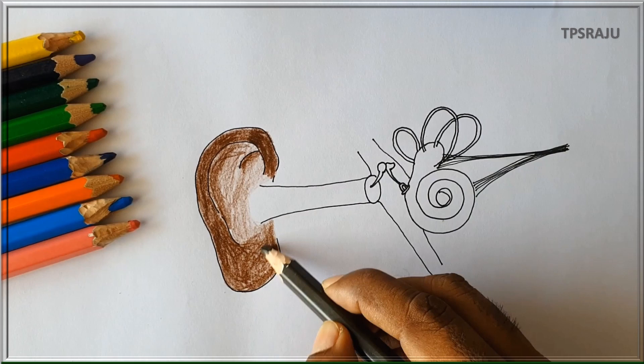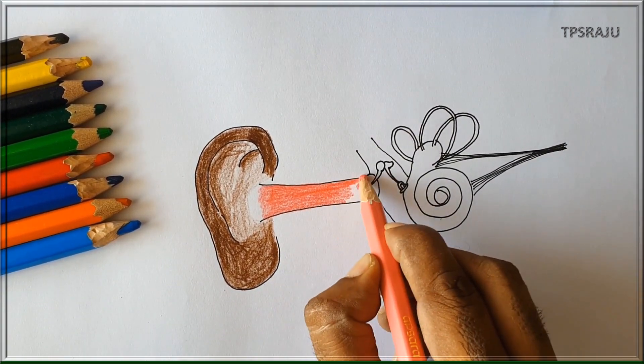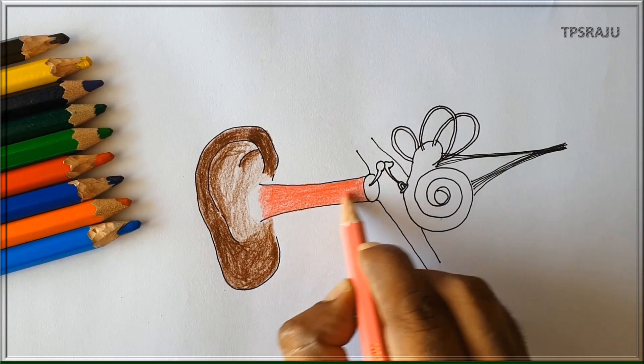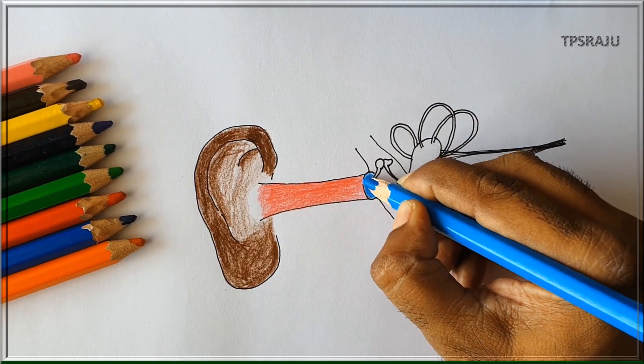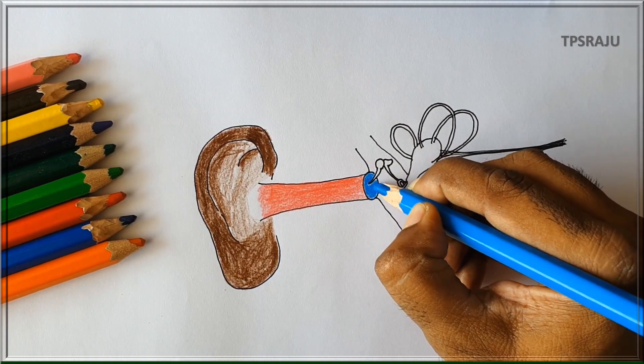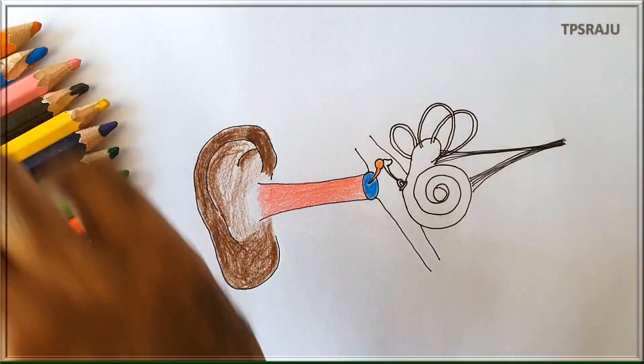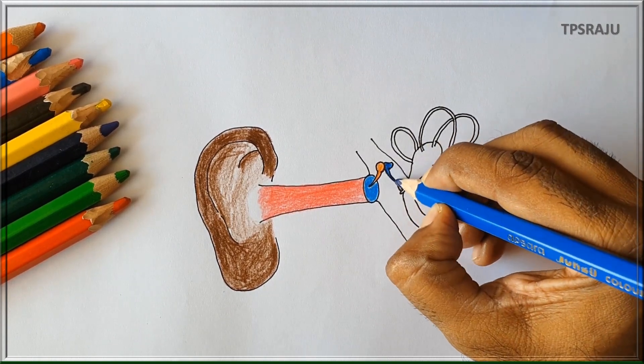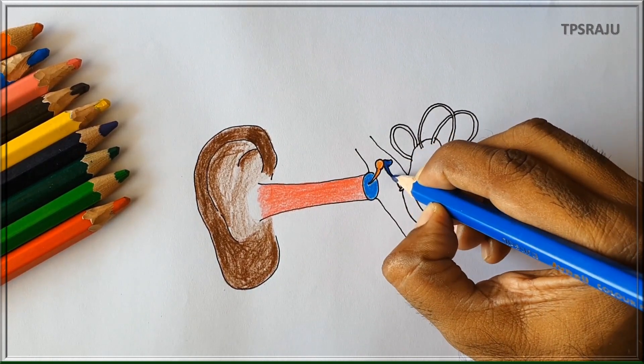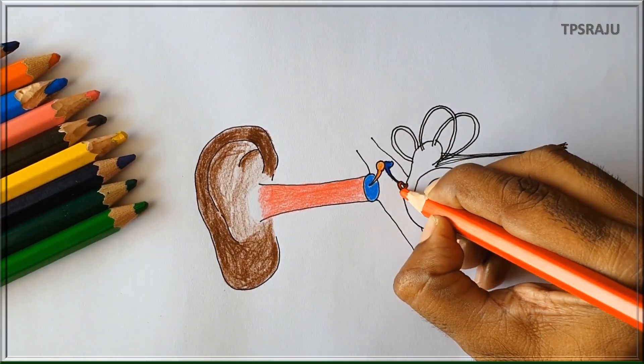We are applying brown color to pinna, applying pink color to auditory canal, blue color to tympanum, orange color to malleus, dark blue color to incus, red color to stapes.